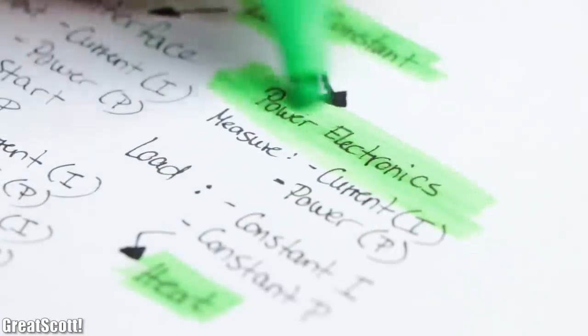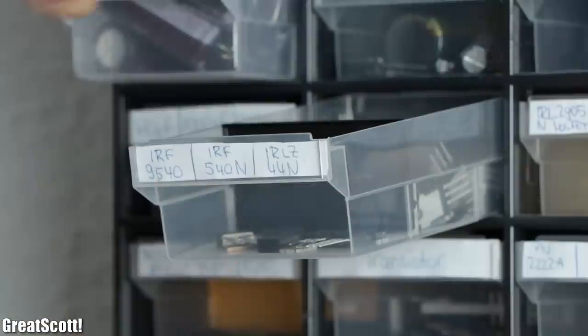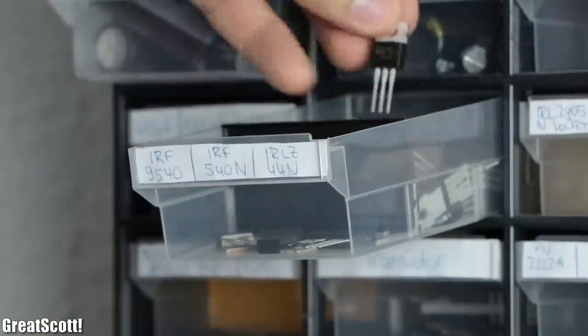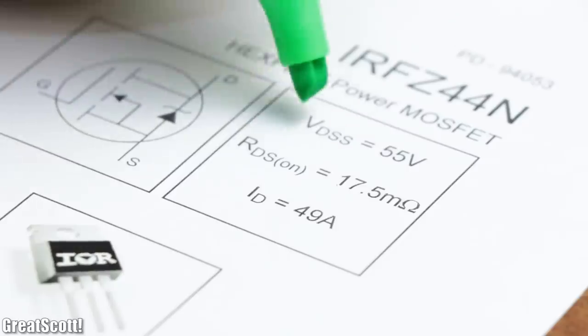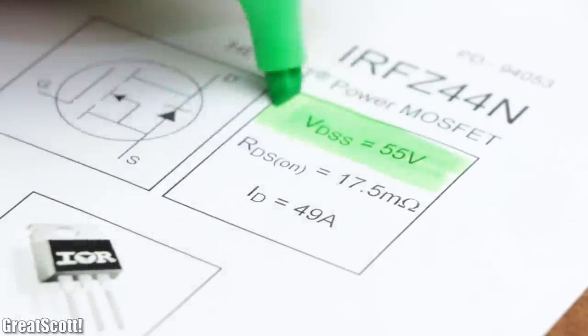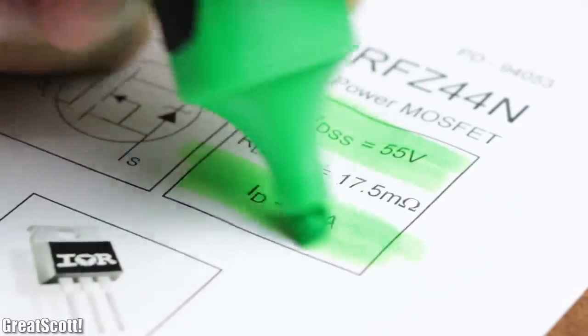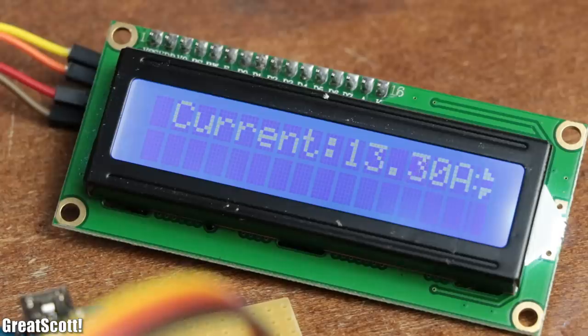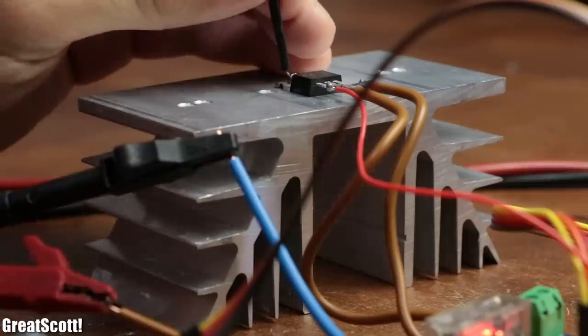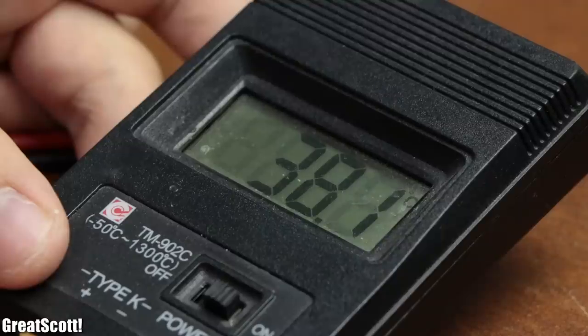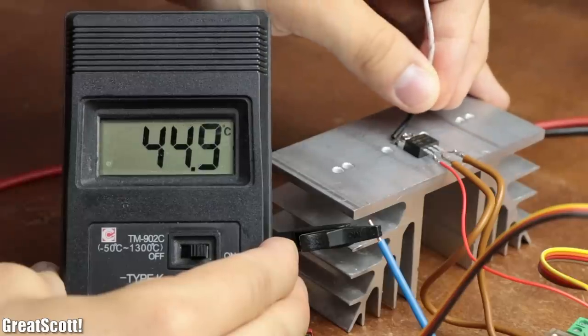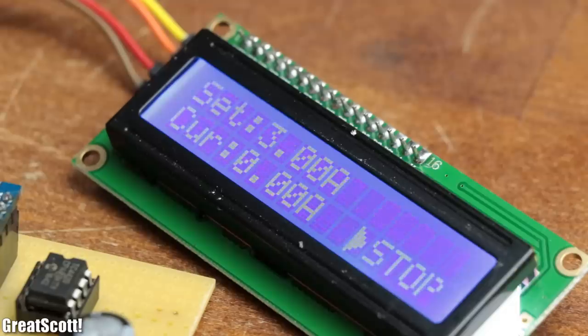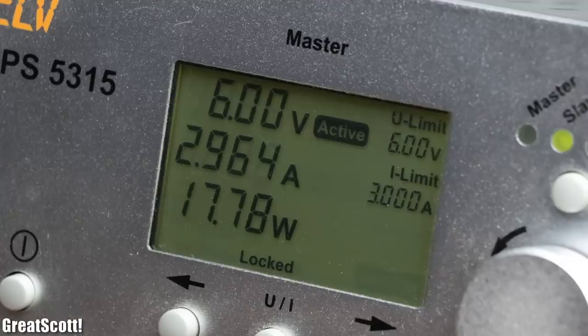So let's start off with the power electronics part whose main component will be a simple MOSFET. This one is an IRFZ-44N who according to its datasheet can handle up to 55 volts and 49 amps. But keep in mind that a 49 amp current draw can only be reached if the heat dissipation of the MOSFET's heatsink allows it by keeping it cool, which will most likely not be possible with my passive cooling solution. But something like 3 amps at 6 volts is easily possible.